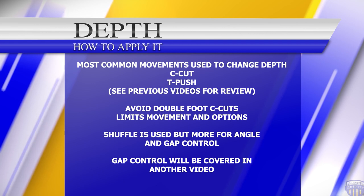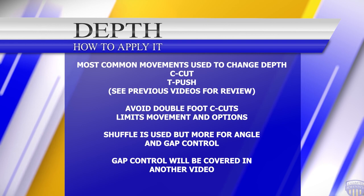We can gain depth with a few different types of footwork, but the most common ones are C-cuts and T-pushes. Each movement has an appropriate time and place, but as a general rule of thumb you want to avoid a double-footed C-cut to gain space, as it is really hard to make any other movement until you complete it. A shuffle is also used but not nearly as often.